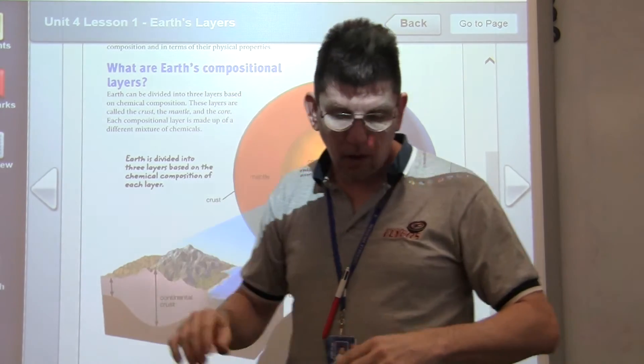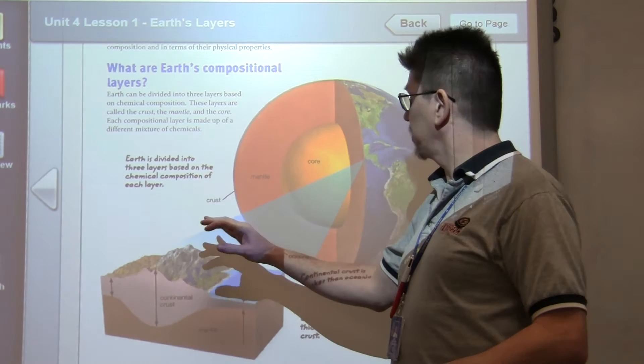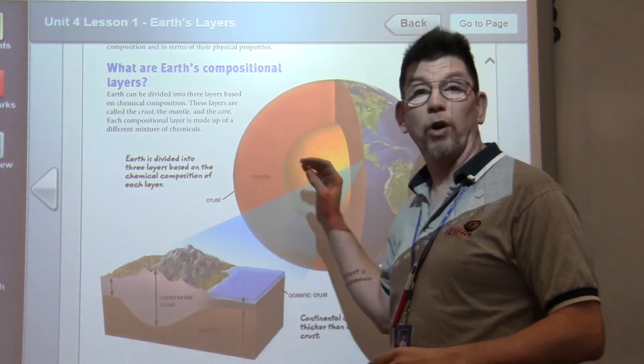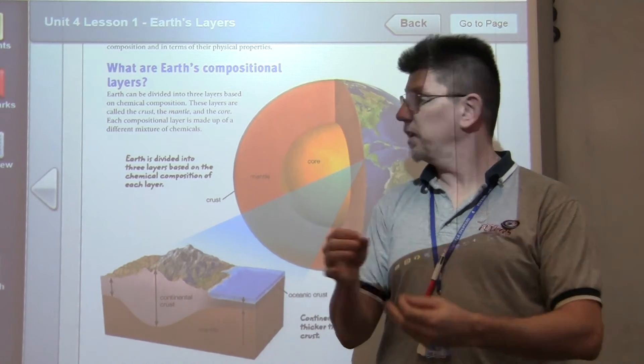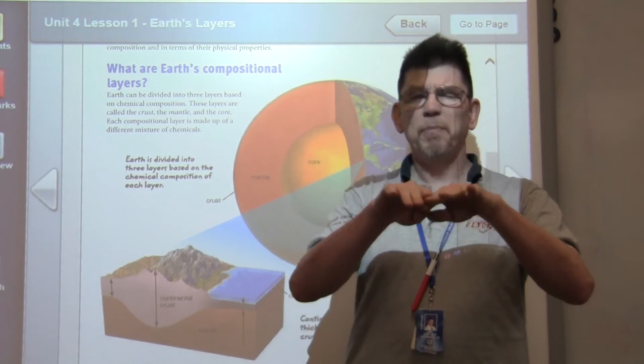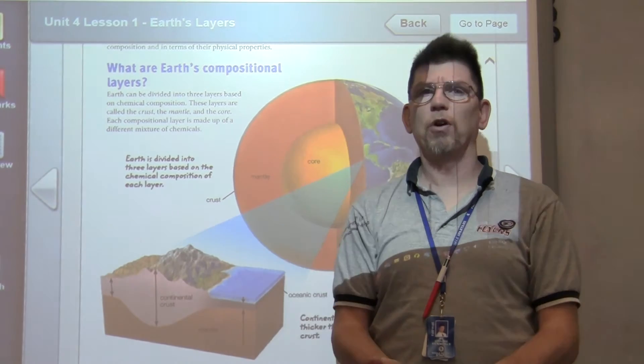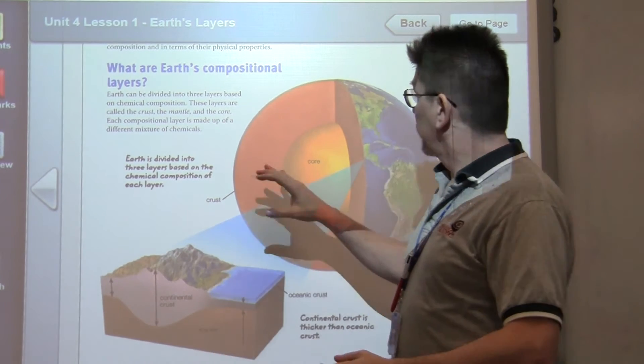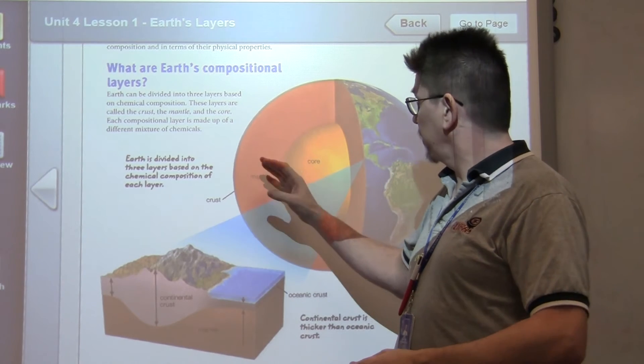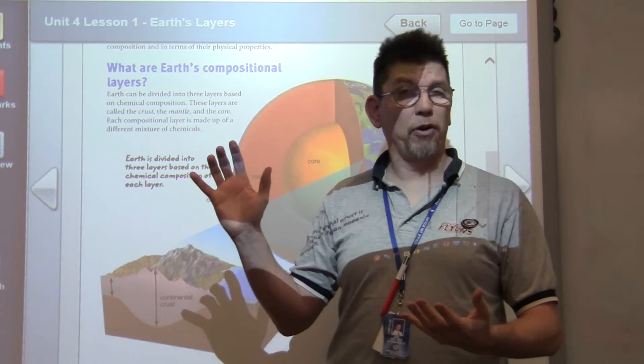So looking at the three compositional layers, we have the crust, the mantle, and the core. The crust is extremely thin compared to the mantle and the core. It makes up a very small percentage of the overall earth. The mantle makes about two-thirds of the earth and the core makes up about a third of the earth.